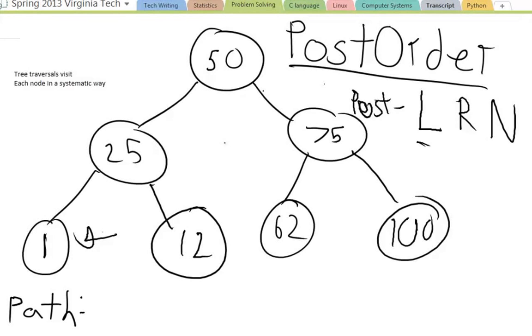And now that I'm at one, I check, can I go left? No I can't. Can I go right? No I can't. Can I get the node? Yes I can. One is the first node that I visit. Then I run the algorithm again. Can I go left? No. Can I go right? No. Can I go to the node? I've already been to the node, so I go back up.